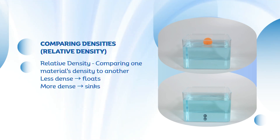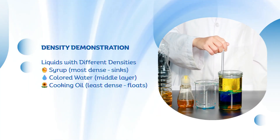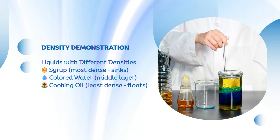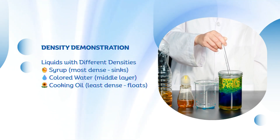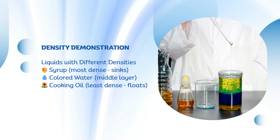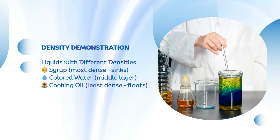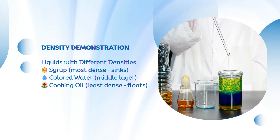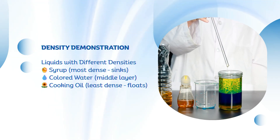Let's see how this looks in a real experiment with liquids. In this demonstration, you can see how different liquids naturally form layers based on their density. When syrup, colored water, and cooking oil are carefully poured into a glass container, they don't mix together. The syrup sinks to the bottom because it's the most dense, the colored water settles in the middle, and the cooking oil floats on top since it's the least dense. Even if you gently stir them, the liquids eventually separate again, each returning to its position according to its density.